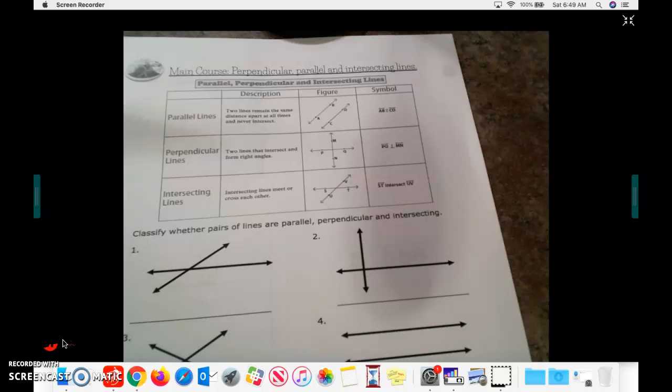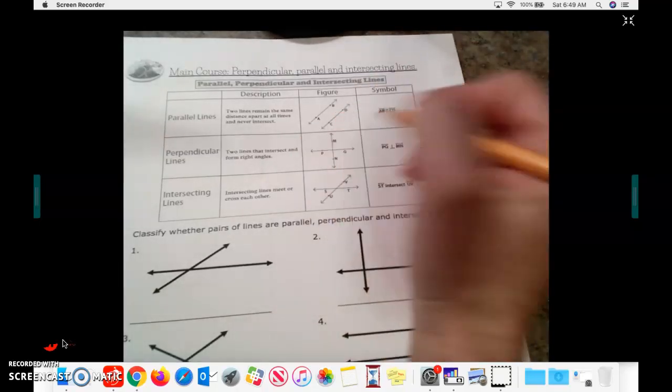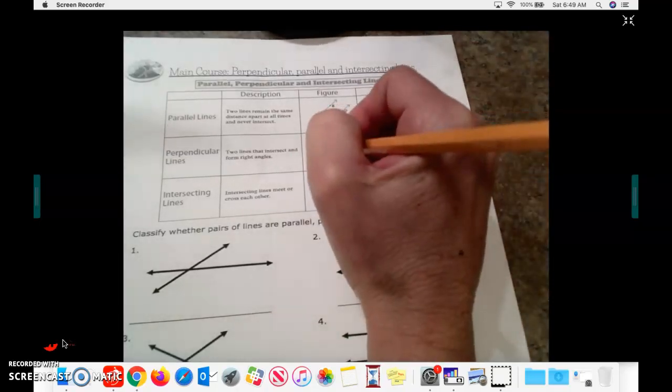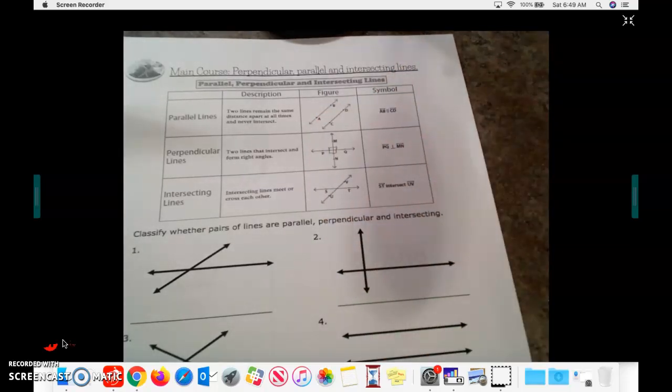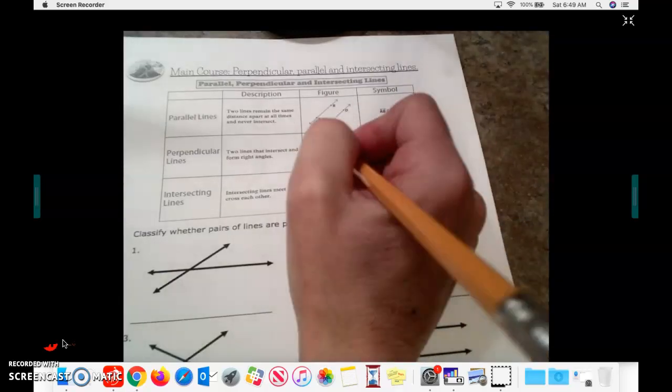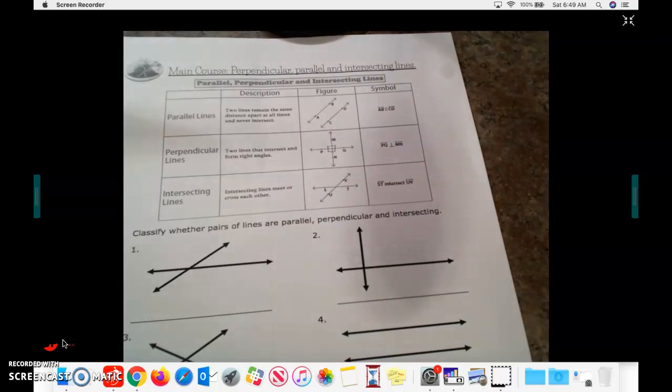Perpendicular lines are lines that intersect. And when they intersect, they form four right angles. They form right angles. So you're going to see each of these angles is a 90 degree angle, which is a right angle.